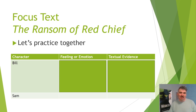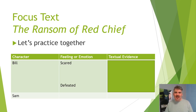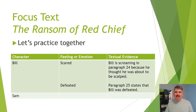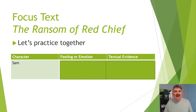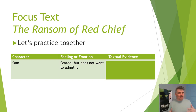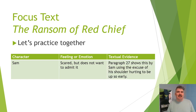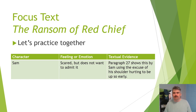Here's what I wrote. Remember your answers do not have to exactly match mine. I said that Bill is feeling scared and defeated. My text evidence is that Bill was screaming in the daybreak paragraph because he thought he was about to be scalped, and to support that he was defeated, the text simply states that Bill's spirit was broken. For Sam, this one seems more difficult. I said Sam was feeling scared too, but doesn't really want to admit it — he uses the excuse that his shoulder was hurting him as why he was up so early.